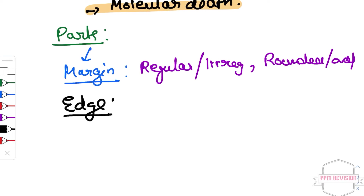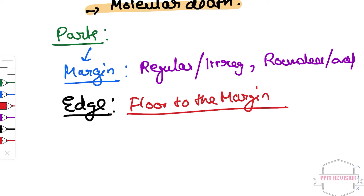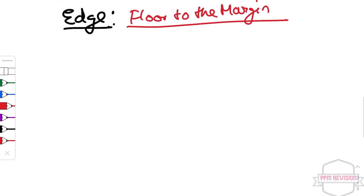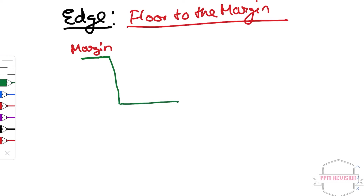Next we look at the edge. The edge is what connects the floor of the ulcer to the margin. There are diagrams to illustrate this — here is the margin, the floor, and the base of the ulcer.